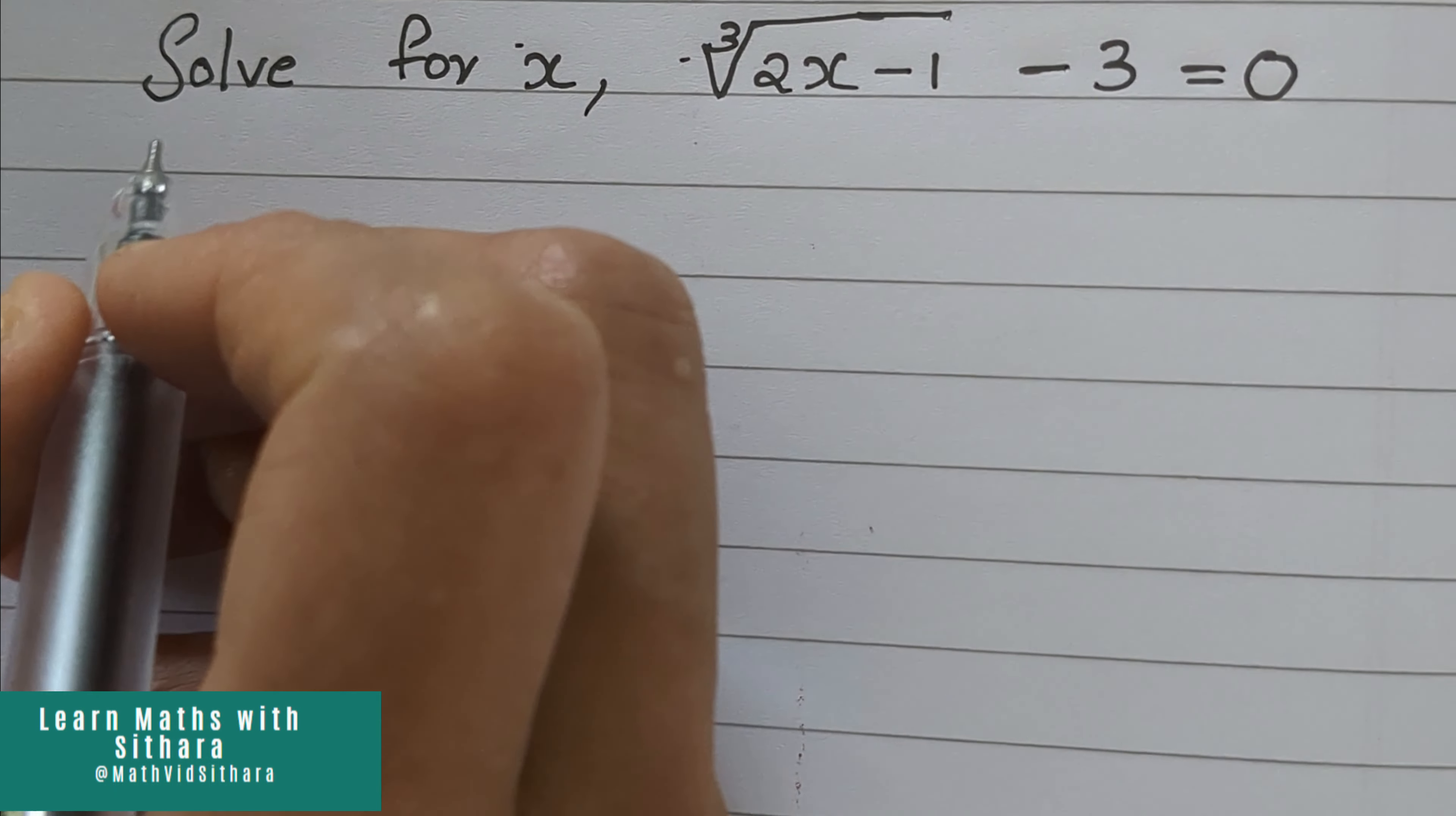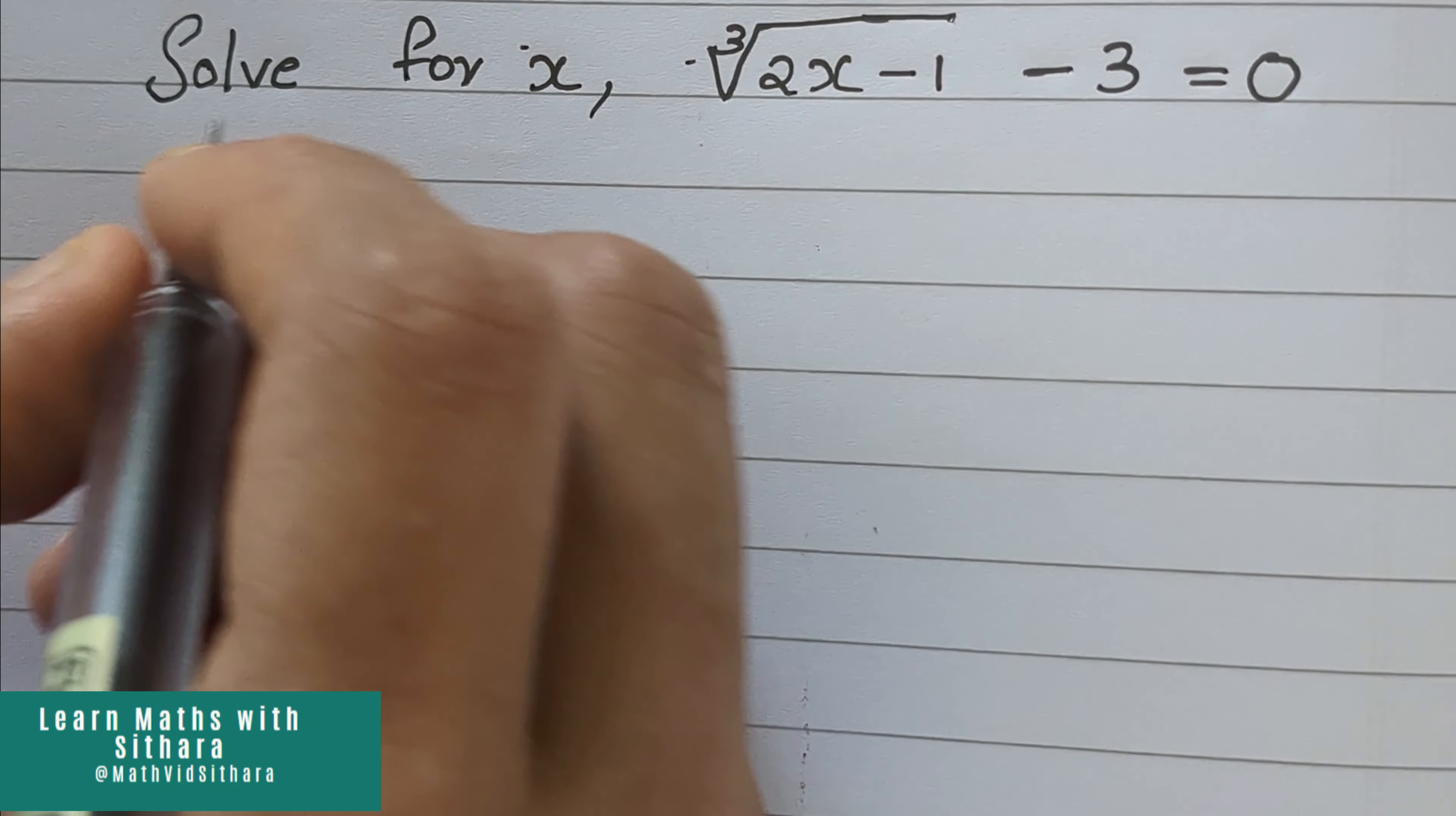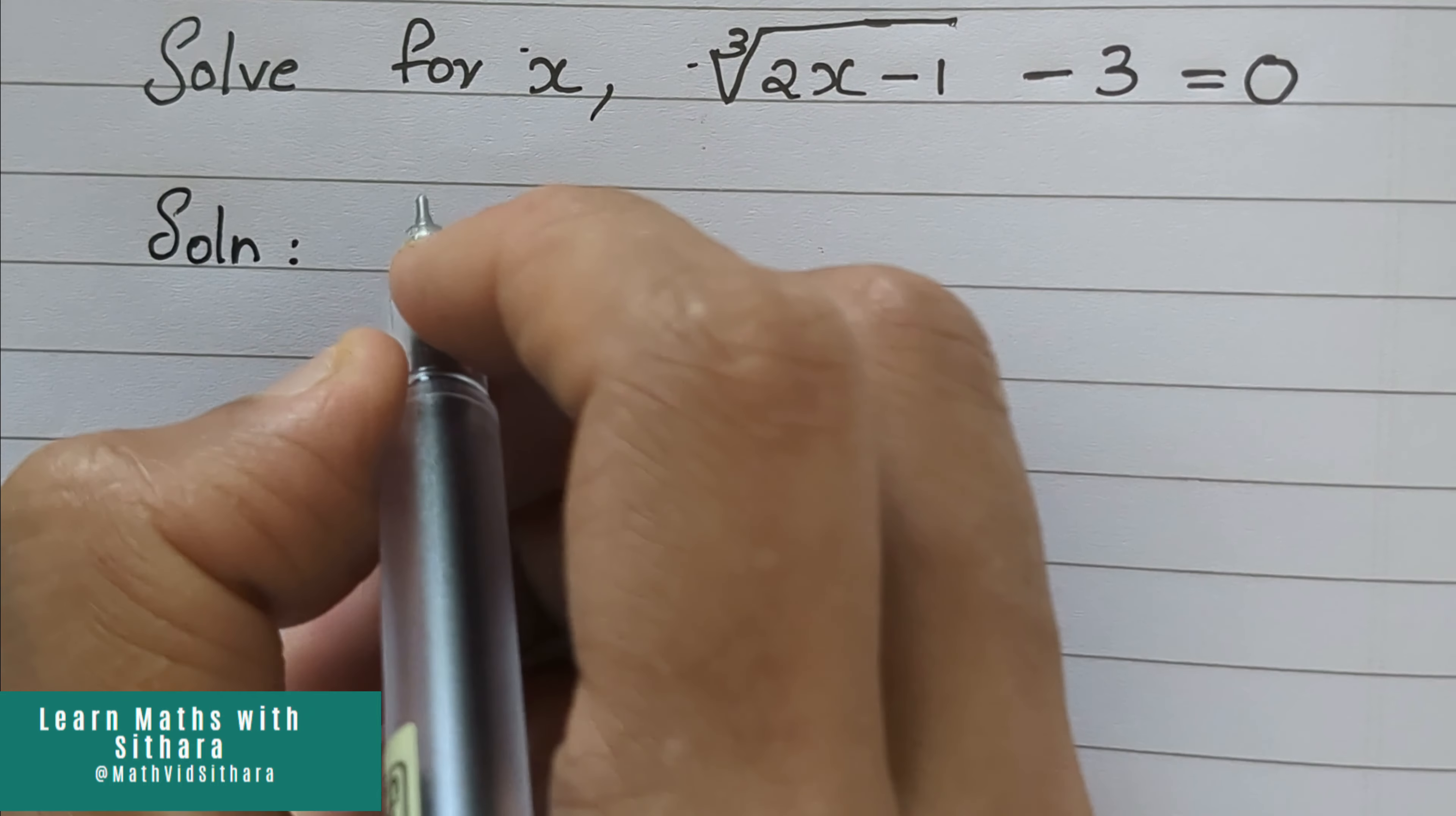Hello everyone, so we have to find the value of x in the equation 3 root 2x minus 1 minus 3 equal to 0. So let's solve it.